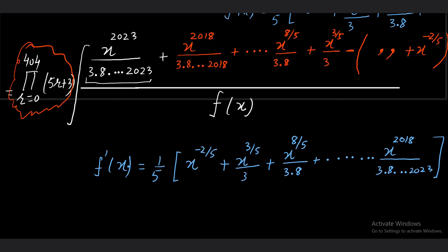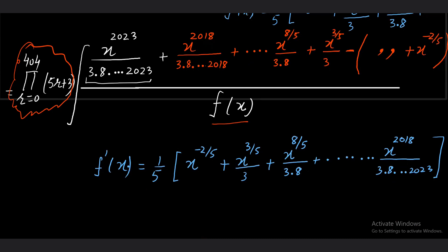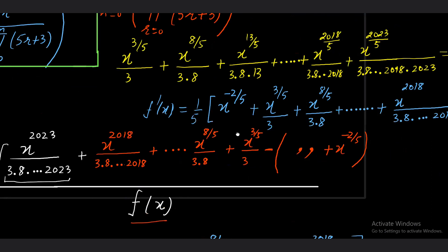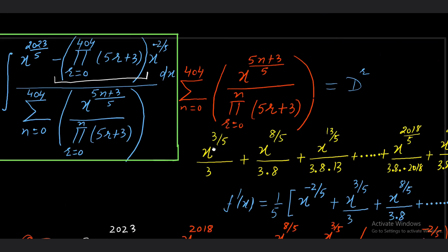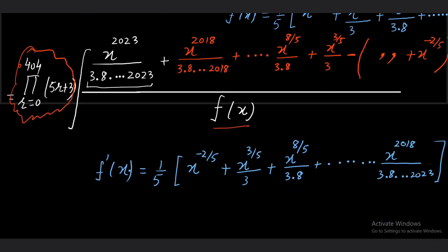Since the degree of numerator and denominator are the same, we assumed the denominator as f(x) and now we are going to create the denominator in the numerator. To do this we add and subtract some terms. Keep in mind there is one more term x^(−2/5) in the numerator — I balanced that power at the end. So the red part we added to make the denominator, and the same red part we subtracted to balance — ultimately we are adding zero.